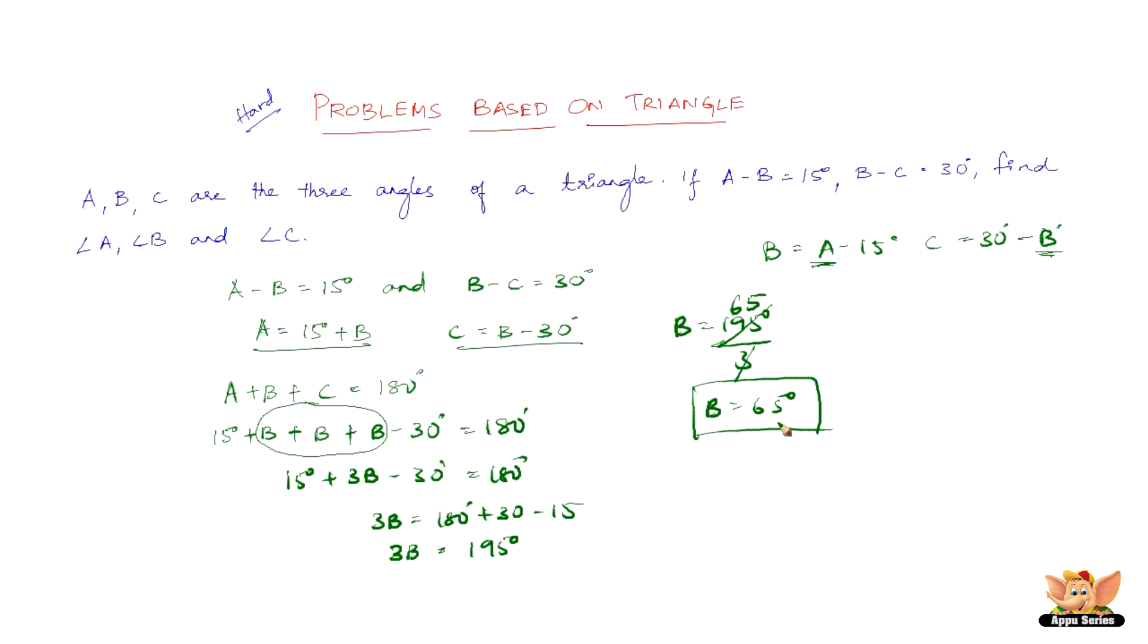So now that we found B, we can find the rest very easily because A equals 15 plus B, that is 15 plus 65, which is 80 degrees. And C equals B minus 30, that is 65 minus 30, which is 35 degrees. So 65 plus 35 is 100 and 100 plus 80 is 180.